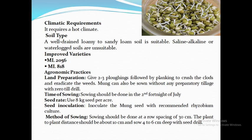Agronomic Practices – Land Preparation: Give 2 to 3 ploughings followed by planking to crush clods and eradicate weeds. Mung bean can also be sown without any preparatory tillage using zero-till drill. Time of Sowing: Sowing should be done in the second fortnight of July. Seed Rate: Use 8 kg viable seeds per acre. Seed Inoculation: Wet the seeds recommended for one acre with a minimum amount of water, mix thoroughly one packet of Rhizobium on a clean paved floor, and let it dry in shade. Sow the seeds immediately. Rhizobium and fungicides can be applied simultaneously.